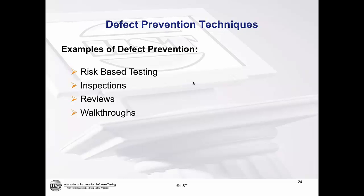In terms of defect prevention, there are four basic defect prevention techniques that are part of the ways in which a tester can inject himself early in the process to help identify and remove defects: risk-based testing, inspections, reviews, and walkthroughs. We'll talk about these briefly at a high level.